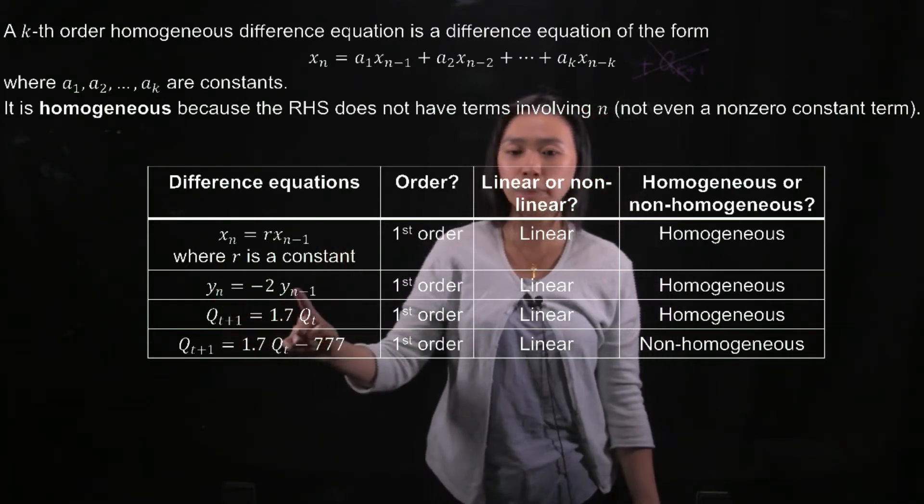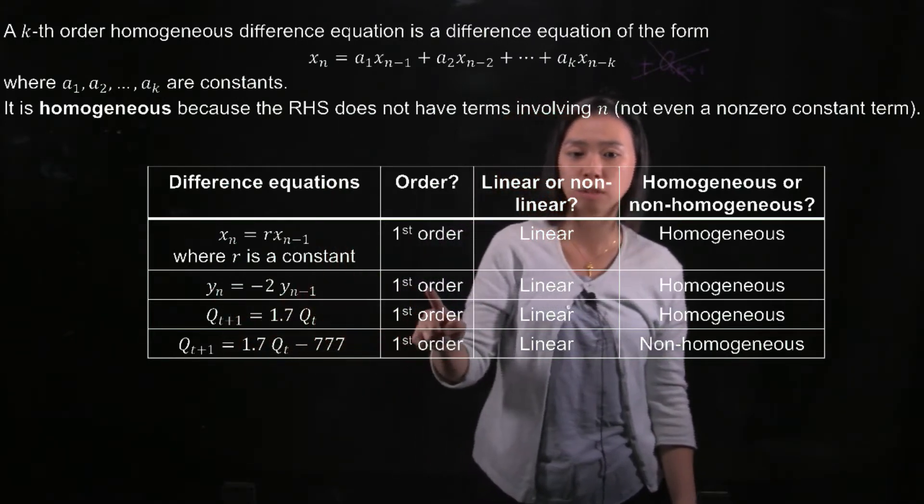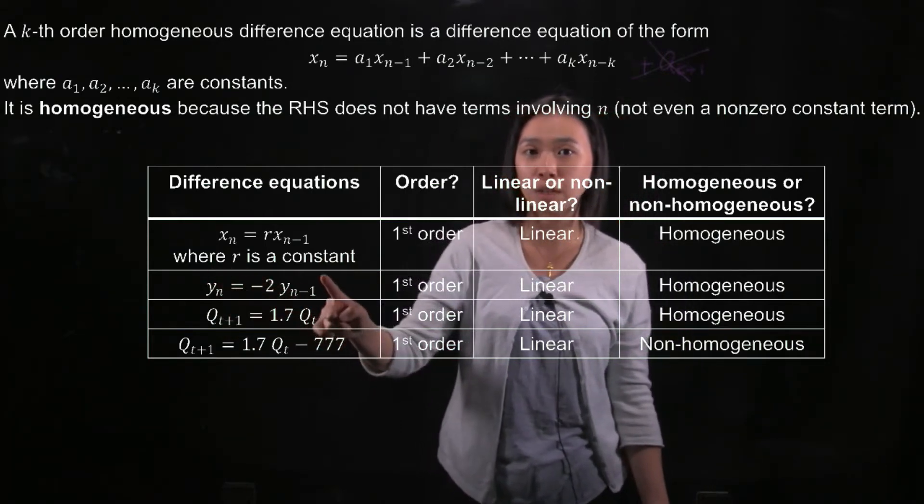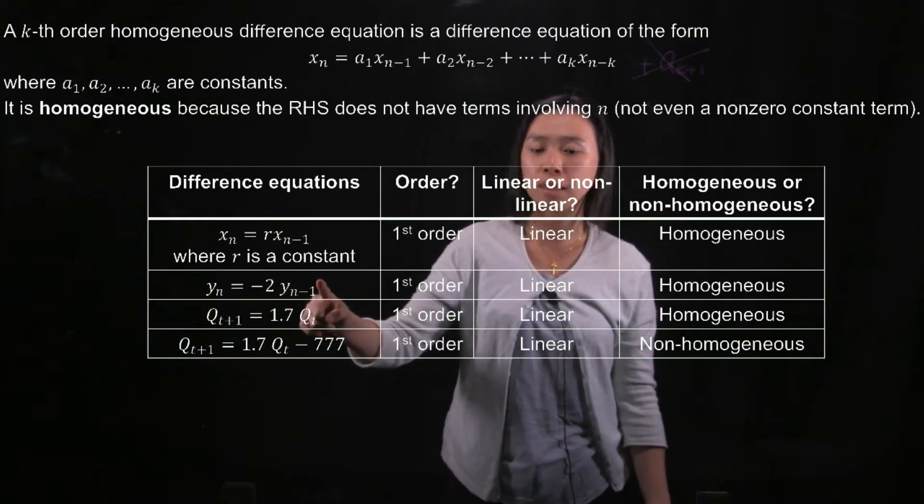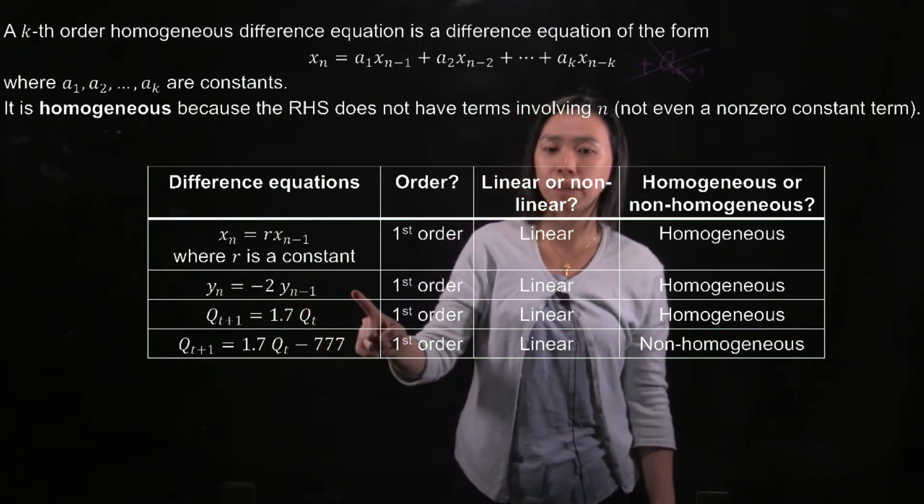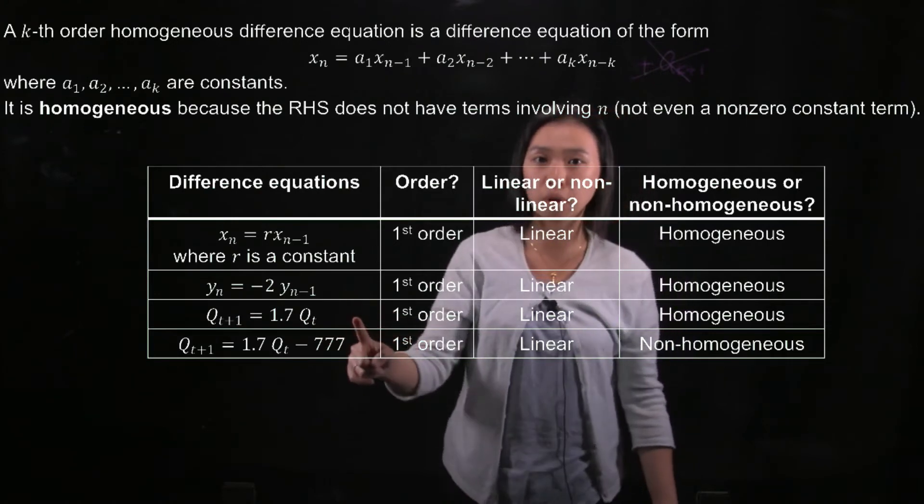In the second example, yn depends on yn minus 1, so it is of the first order. It is linear because yn and yn minus 1 are of power 1. And it is homogeneous because there is no non-zero constant term adding at the end. The third example is the same.